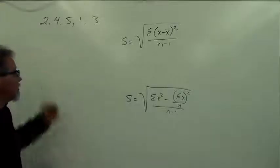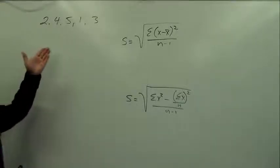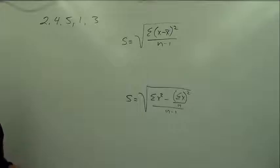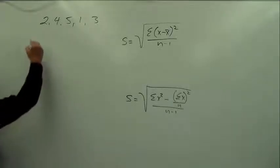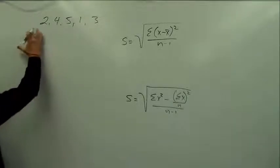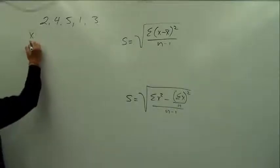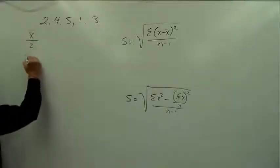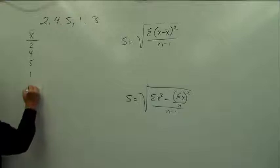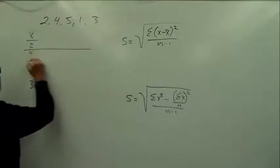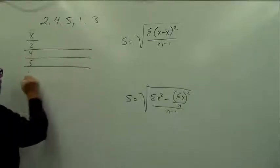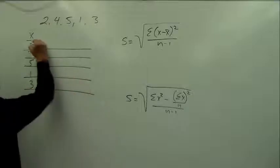Again, this data is from the lesson. There's only five data points here: 2, 4, 5, 1, 3. That's five raw scores. The first thing we do is we put them in a column. Sorry, not x bar yet. Our raw score column: 2, 4, 5, 1, 3. Let's do this first formula right up here first.